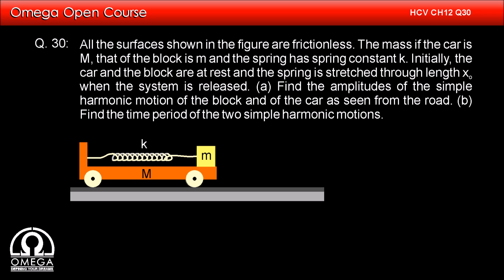All the surfaces shown in the figure are frictionless. The mass of the car is capital M, that of the block is small m, and the spring has spring constant K. Initially, the car and the block are at rest and the spring is stretched through a length X knot when the system is released.